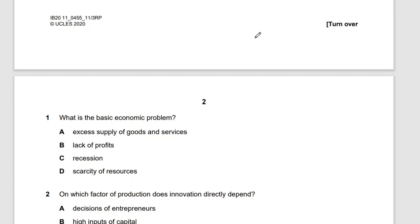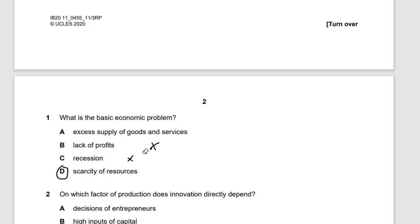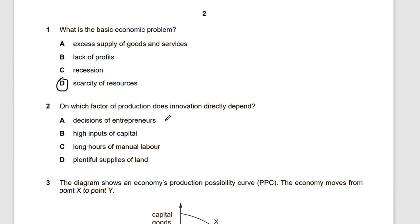This is topic one — the basic economic problem. The answer is D. Scarcity is simply a situation whereby there's not enough to satisfy everyone's wants. Consumers have many wants, and because we don't have that many resources, economics comes into the picture. This is called the basic economic problem.